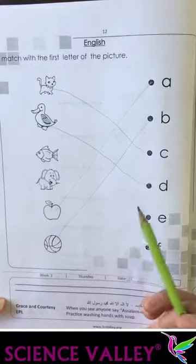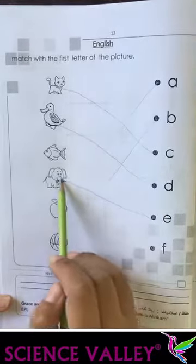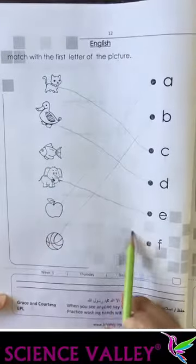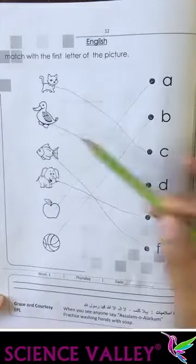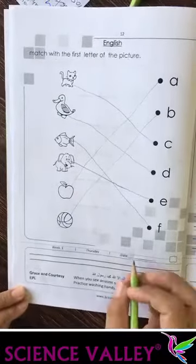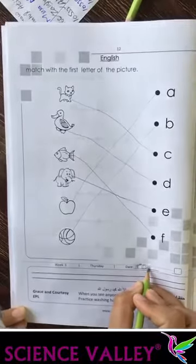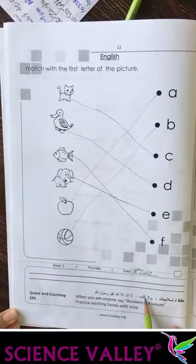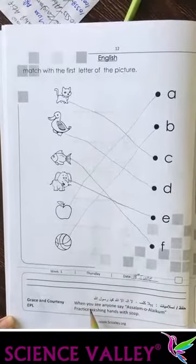Next letter hai E. Fish bannega, elephant bannega. E se elephant. Now match the elephant. Last letter is F. F se kya bannega? For fish. A apple, B ball, C cat, D duck, E elephant, F fish. Week 1, day Thursday, date 18 June.